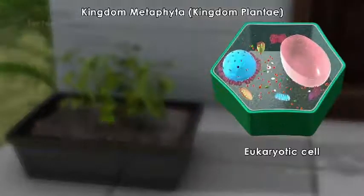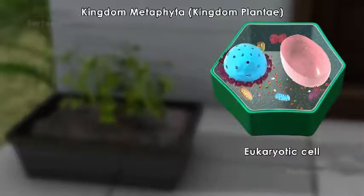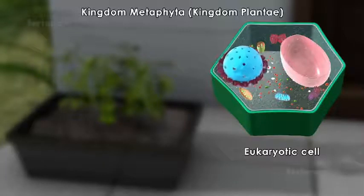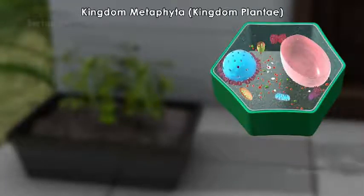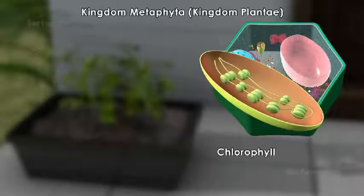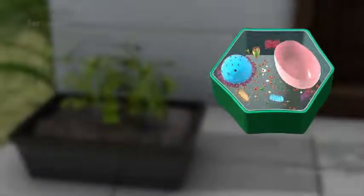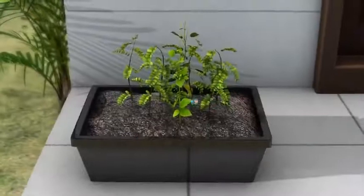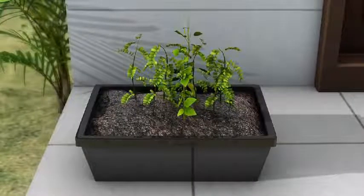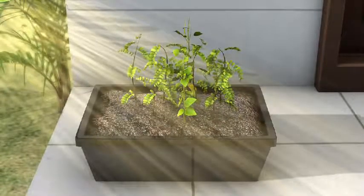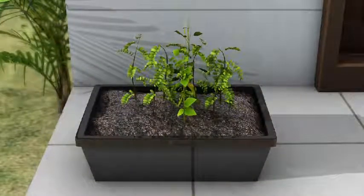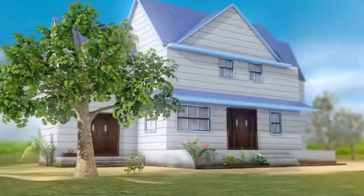The fourth most complex kingdom is Kingdom Metaphyta, also referred to as Kingdom Plantae, and includes multicellular plants with eukaryotic cells, meaning they have a nucleus. The cells of this kingdom contain a cellulose cell wall and a green pigment called chlorophyll. Chlorophyll aids in photosynthesis, a process during which plants make their own food by utilizing sunlight. Kingdom Plantae comprises all plants including herbs, shrubs, and trees.